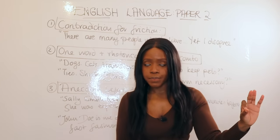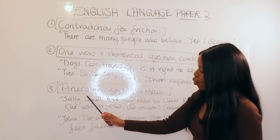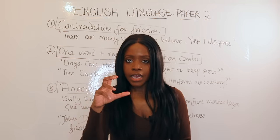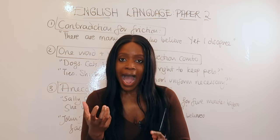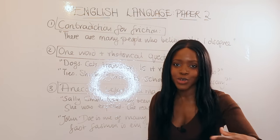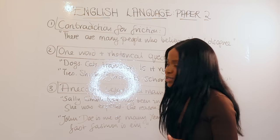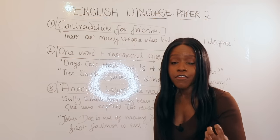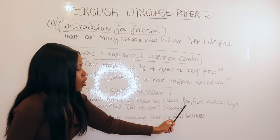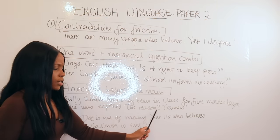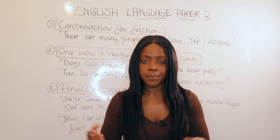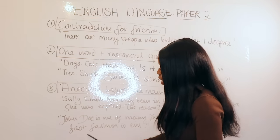The third and final way to start any persuasive writing essay in a really impactful way is what I call the anecdote before the main. An anecdote is simply a story based on one individual — you give them a name and surname and show how they were affected by the issue. My go-to names are Sally Smith or John Doe, both in year 11. For instance, arguing against school uniform: 'Sally Smith had only been in class for five minutes before she was expelled — the reason? Trainers.' Here I'm showing how ridiculous strict school uniform rules can be.